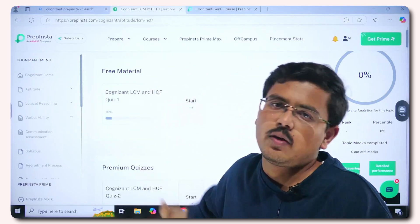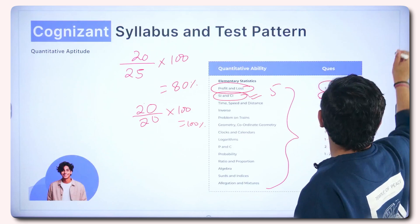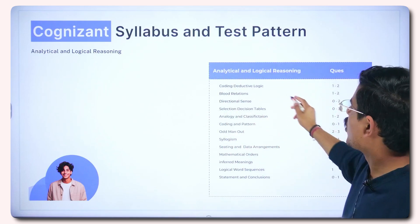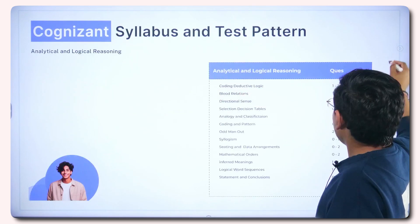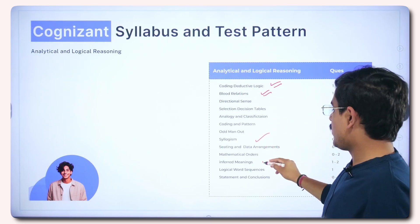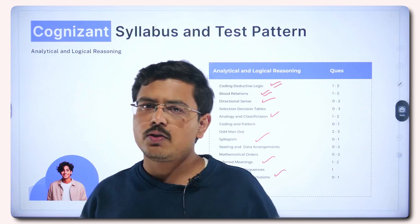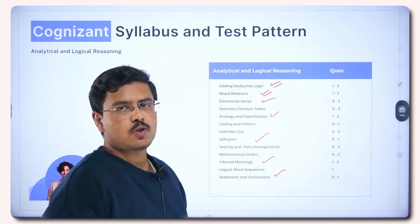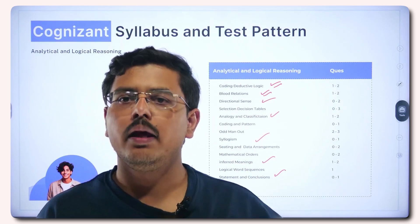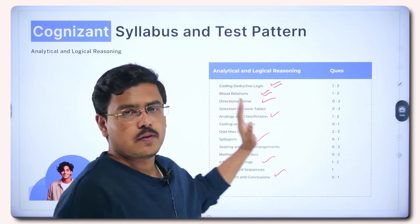For analytical and logical reasoning, coding deductive logic is very important and must not be missed. Other key topics include blood relations, syllogism, inferred meanings, statements and conclusions, analogy, classifications, and directional sense. If you want this PPT, comment below and you'll be sent a link to a community group where it's available.